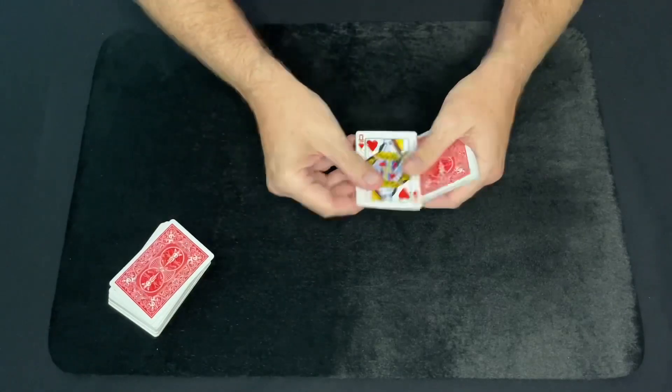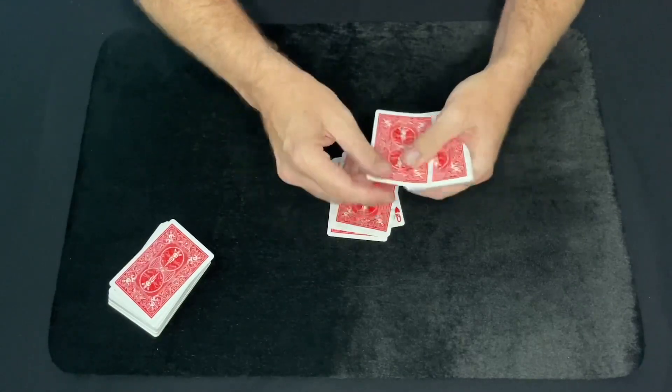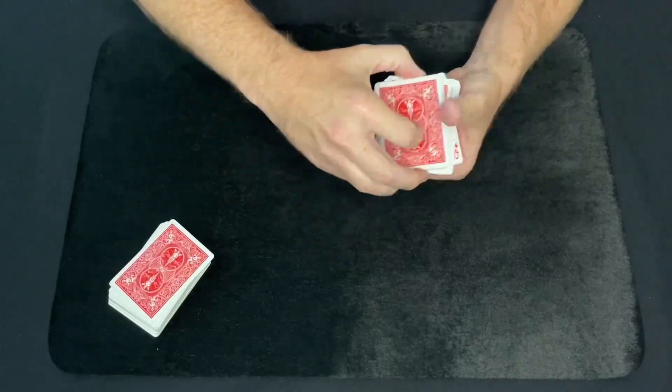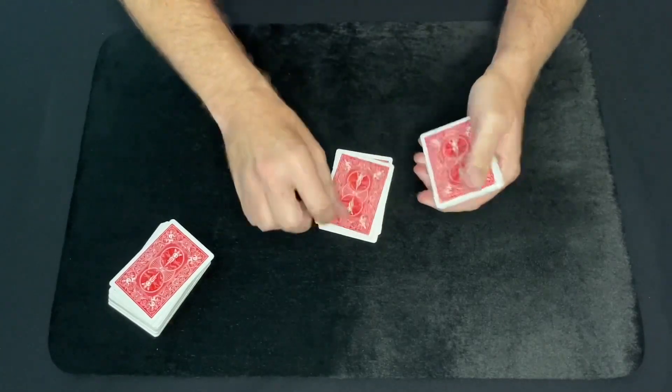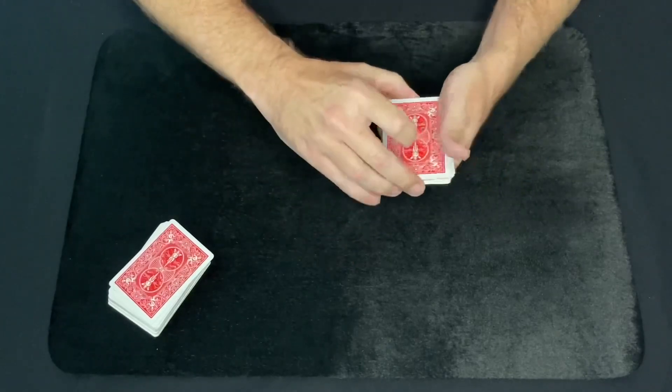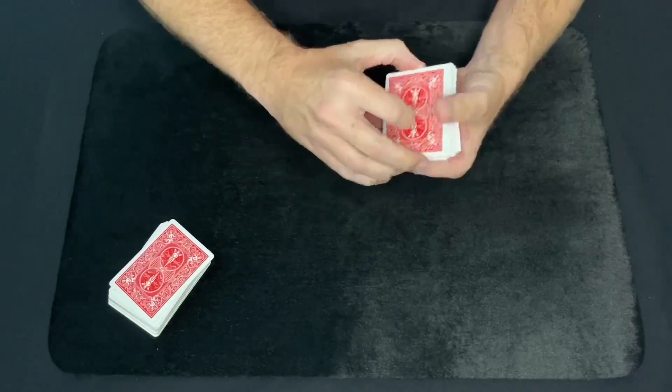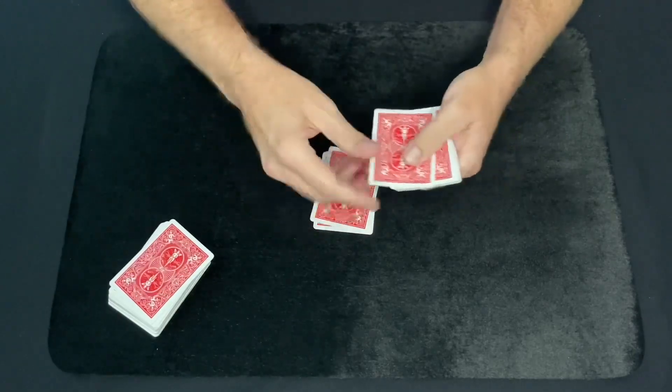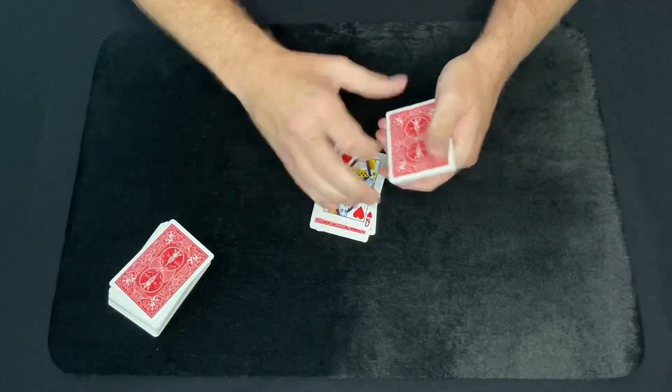If I spell out Between, B-E-T-W-E-E-N. The, T-H-E. Two, T-W-O, and they're red, so R-E-D, and then finally Queens, Q-U-E-E-N-S.